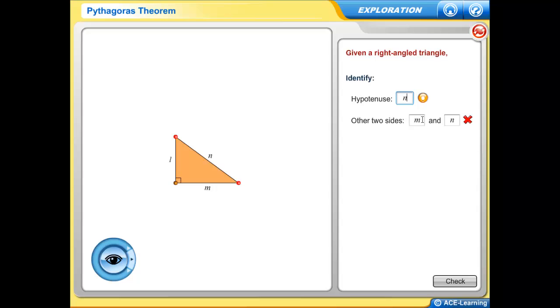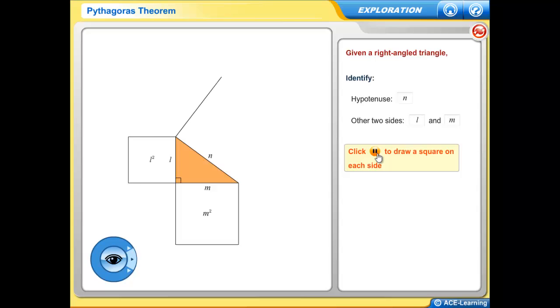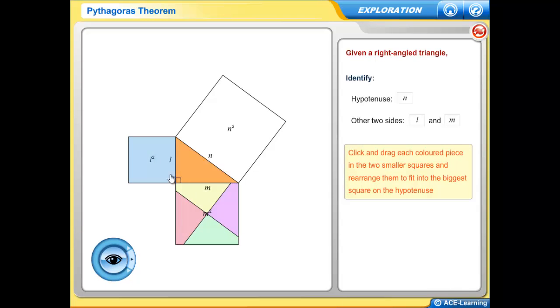For some topics, there are some prerequisite skills that students must have before they are allowed to embark on the exploratory journey. In this case, the system checks if the student knows where the hypotenuse of a right-angled triangle is. Once the check is done, the student proceeds with the rest of the activity.